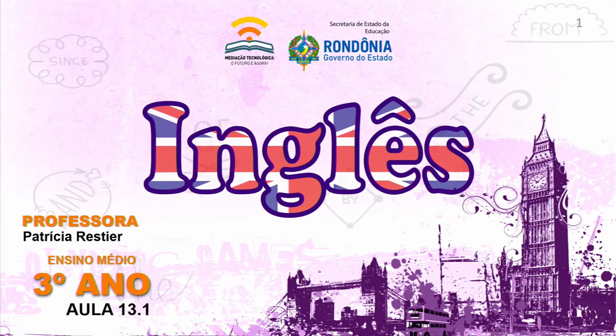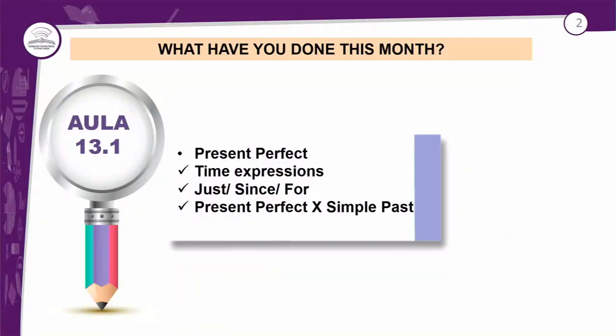Olha essa aula 13.1 com o título de 'What have you done this month?' Por quê? Porque é uma estrutura no presente perfeito, uma pergunta com pronome interrogativo. O 'have', que é aquele verbo que a gente usa com o present perfect, além do 'has', que são verbos auxiliares, que nem sempre você vai traduzir. Você tem o seu sujeito, o verbo principal, que é o verbo 'to do', na forma 'done' do particípio passado. E o 'this month', que é uma expressão de tempo, onde você fala que é este mês. Este mês acabou?